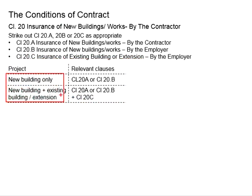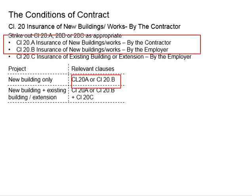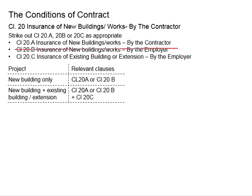There are two scenarios. The first scenario is that the project involves only a new building and there is no existing building in or near the construction site that may be affected by the new construction work. In this case, the relevant clauses will be either Clause 20A or 20B. The employer decides who takes up the insurance; if the employer does it himself, Clause 20A is struck out, otherwise Clause 20B is struck out.